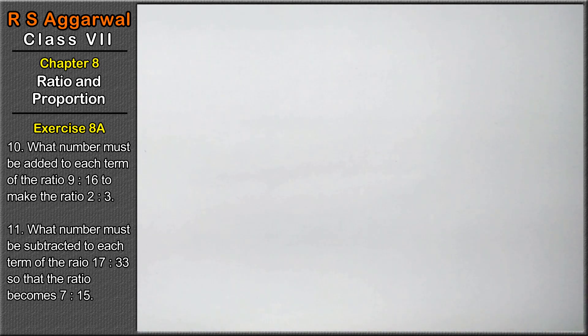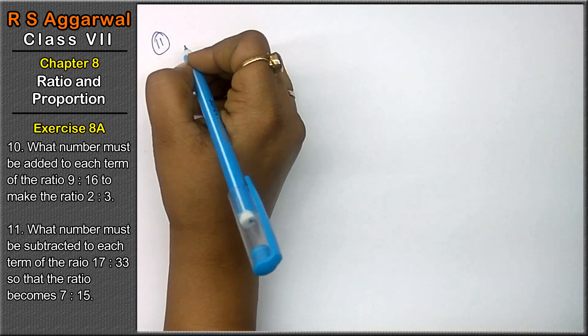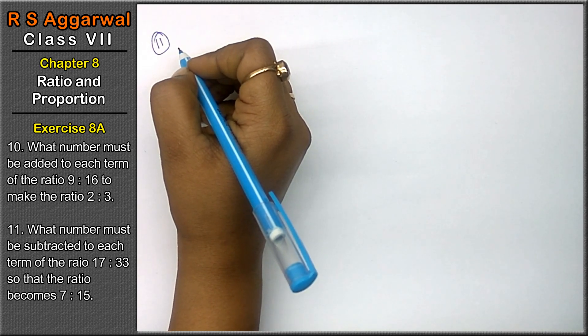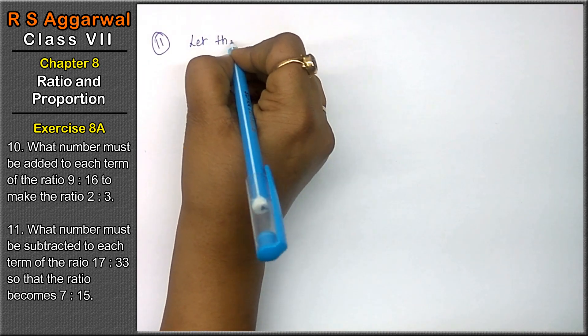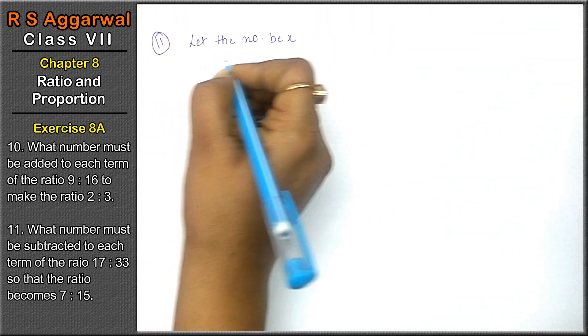Next question, 11th question of exercise 8A, that is ratio and proportion. What number must be subtracted? Let the number be x.